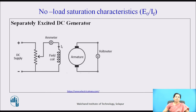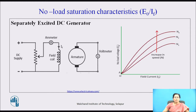This is the circuit which is used to find out the characteristics. An ammeter is connected in series with the field winding to measure the field current, and the voltmeter is connected across the armature. For all types of generators, the OCC is the same. The graph shows no-load voltage E_g versus field current I_f, which represents the no-load saturation characteristics, also called the magnetization characteristics.